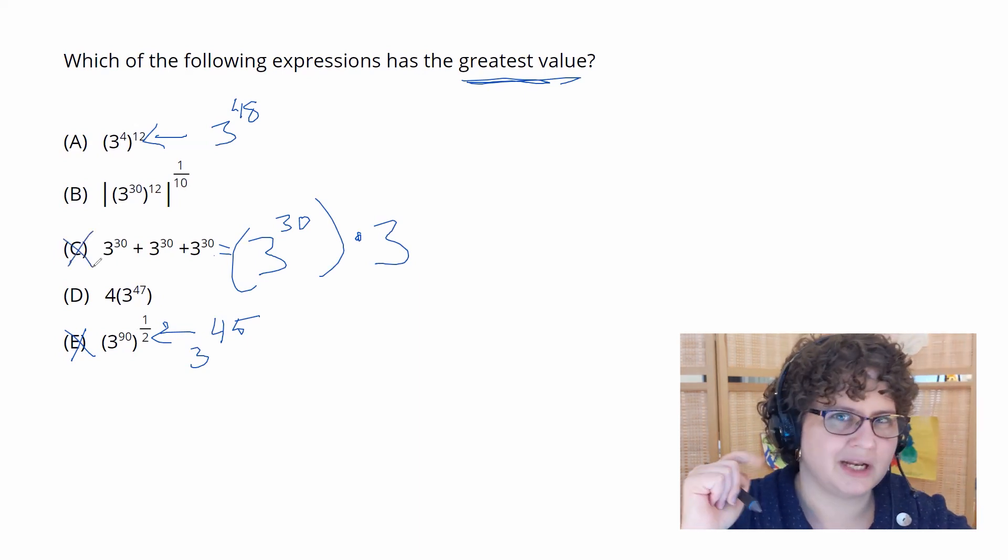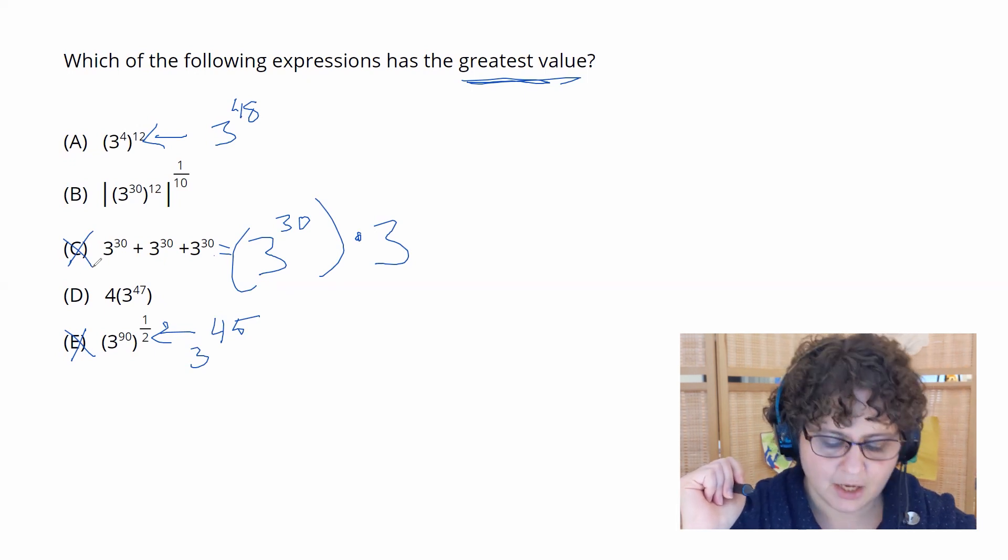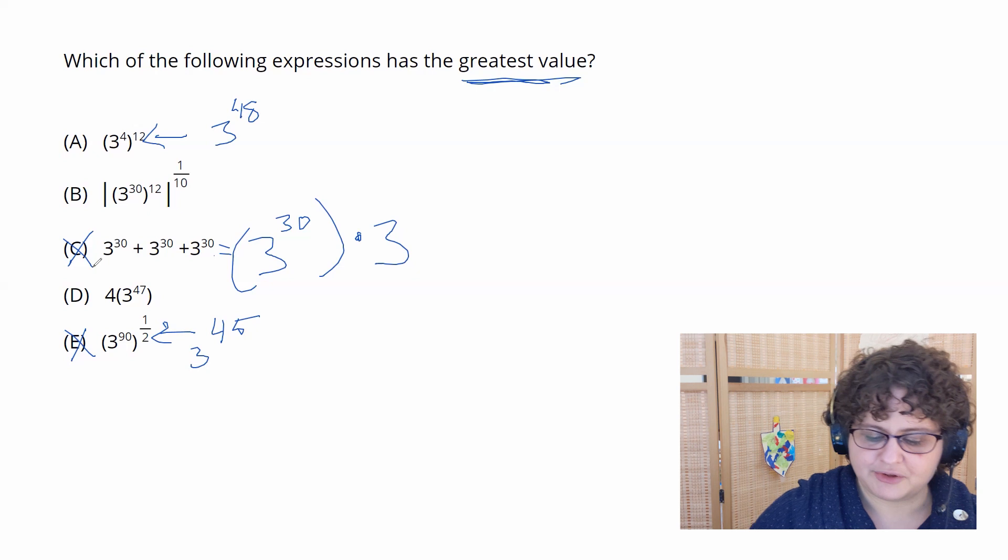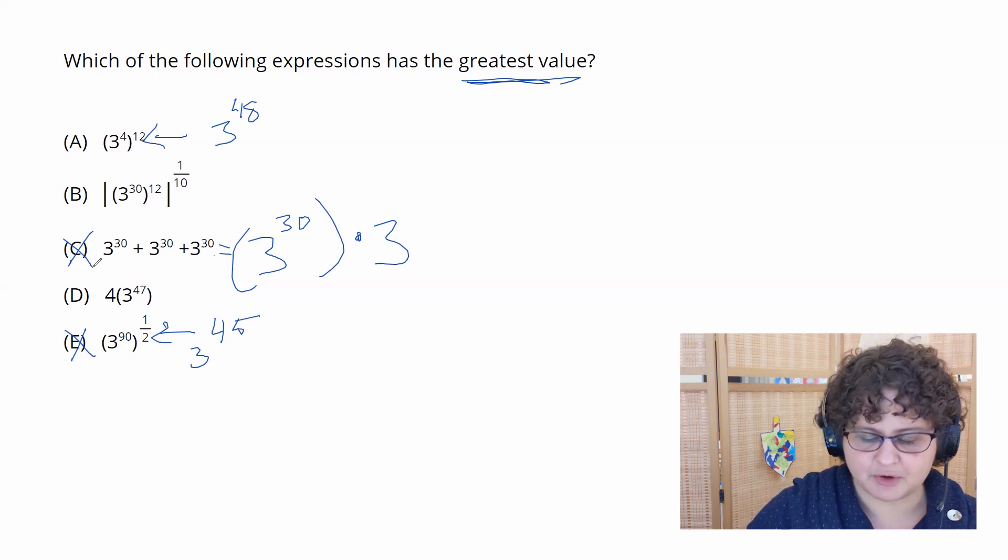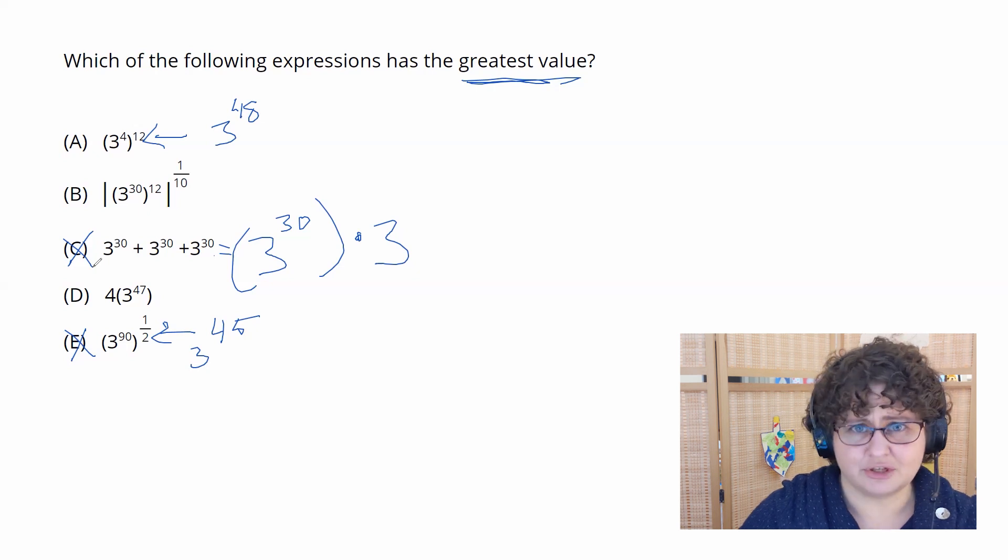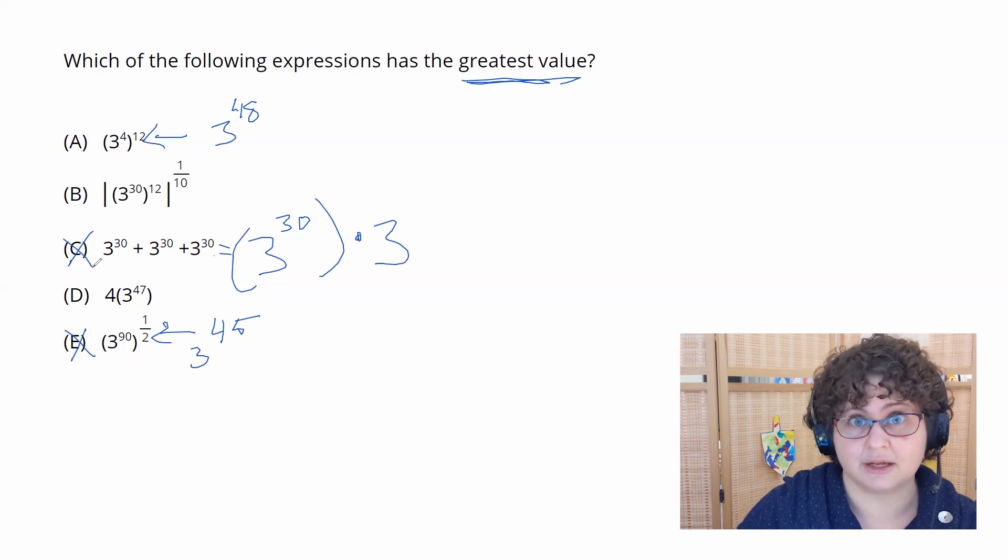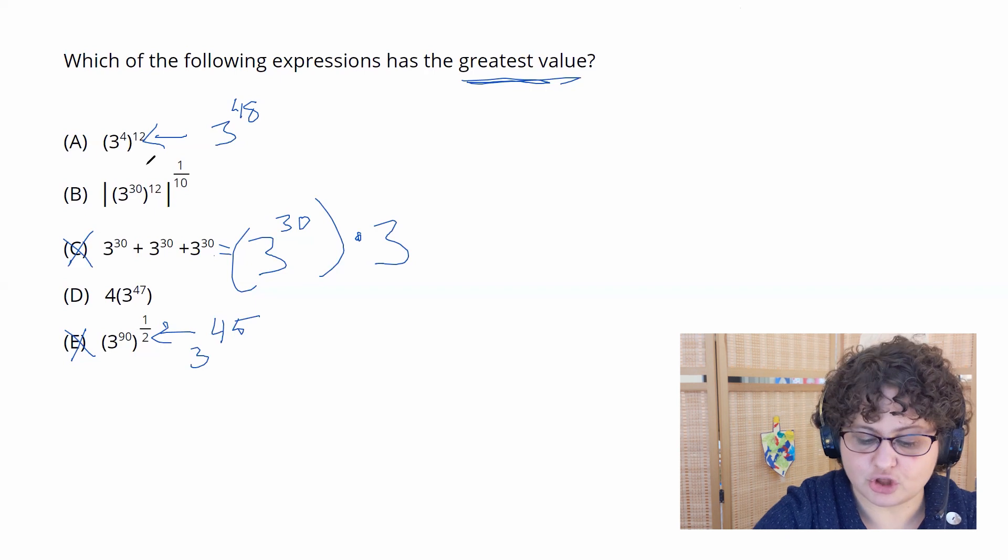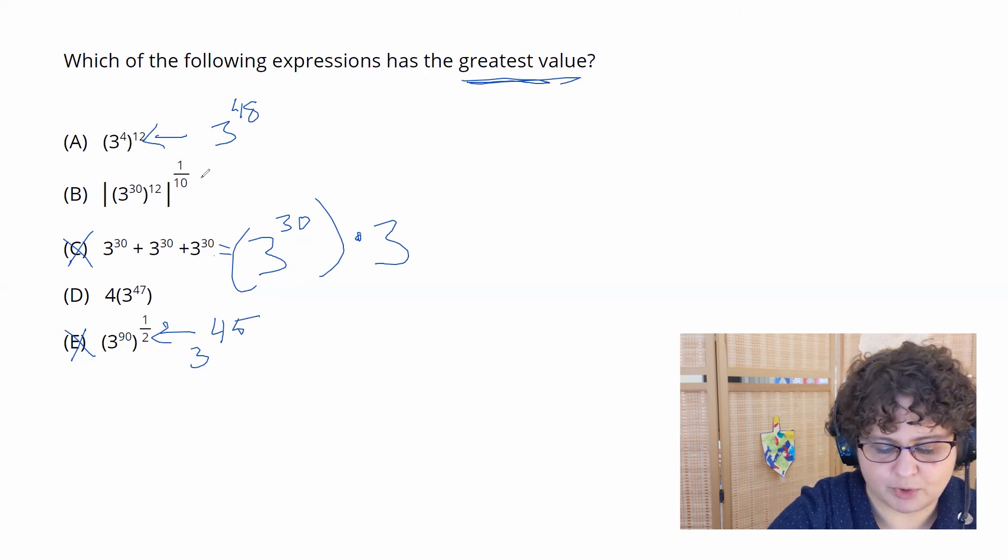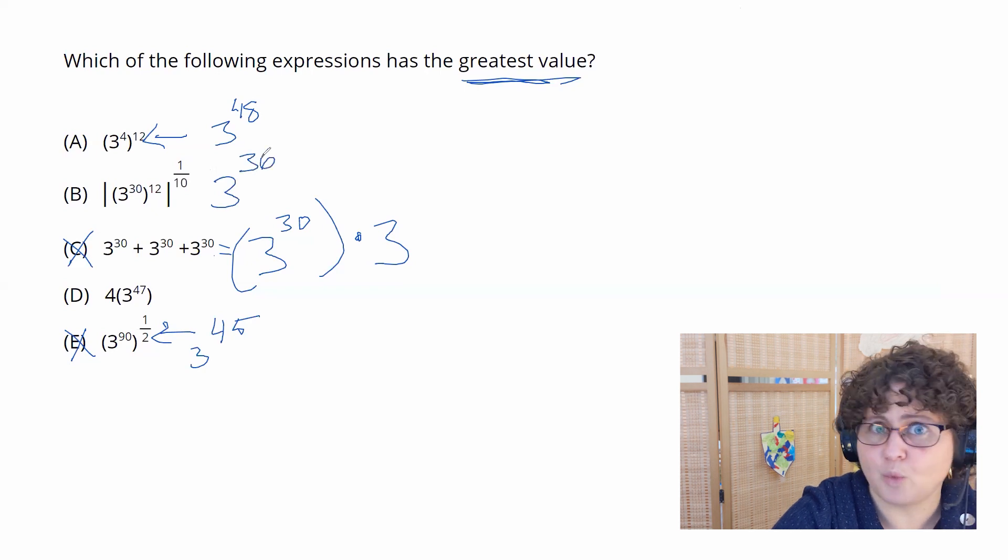I'm going to ignore the one with the 4 for a minute, because that might make things complicated, so let's instead go to B. B has got absolute value signs, which really doesn't matter to us at all because all the exponents are even. Everything's going to turn out to be positive. It's not as if we're comparing positive and negative numbers, so I'm essentially going to ignore those absolute value signs. I'm going to look at B and say this is 3 to the 30th times 1 10th, so 3 to 3, times 12th, so 3 to the 36th. Again, way smaller than 3 to the 48th. That guy's out.